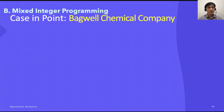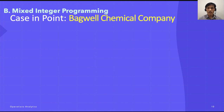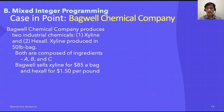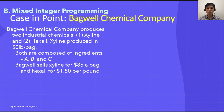The second case of integer programming is mixed integer programming. Although the Harrison Electric example was a pure integer problem, there are many situations in which some variables are restricted to integers and others are not. The following is an example of such a mixed integer programming problem: Bagwell Chemical Company.